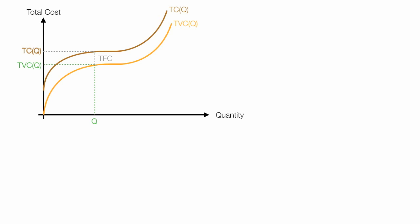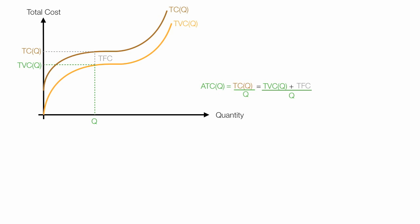It turns out if I take total variable cost plus total fixed costs, that gives me total costs. Total cost is equal to total variable cost plus total fixed cost. Now if I take each one of these and divide by quantity, this all equals average total cost. And that equals total variable cost divided by quantity plus total fixed cost divided by quantity.